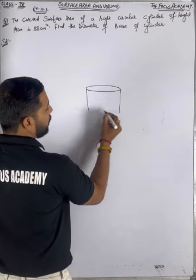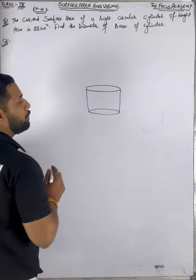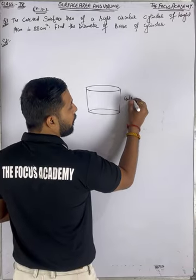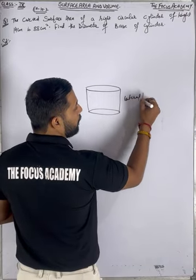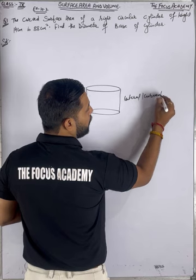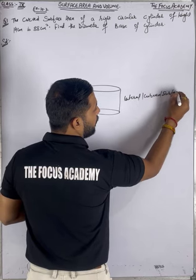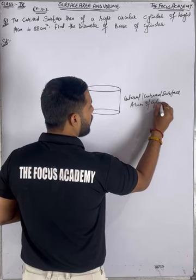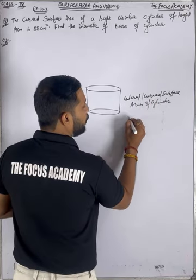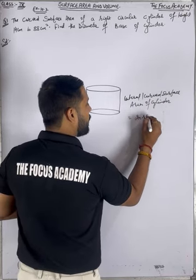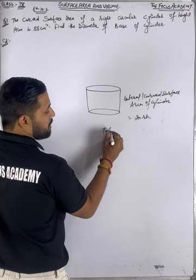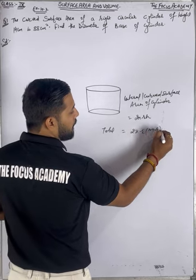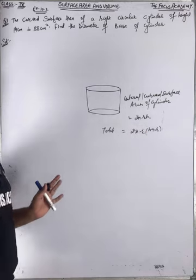First, I will tell you the lateral surface area and total surface area. The lateral surface area — the outer part — which we call the curved surface area, is 2πrh. And remember the total surface area is 2πr(h + r). If you write h plus r or r plus h, both are the same.